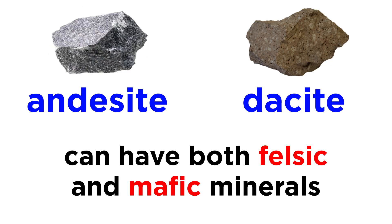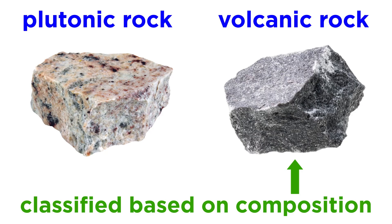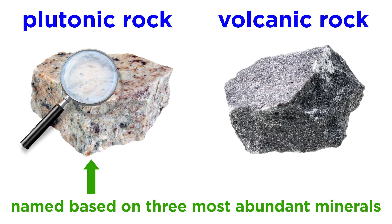Andesites and dacites can have both felsic and mafic minerals, but are typically mostly plagioclase, with lesser amounts of pyroxene, amphibole, and quartz. Plutonic igneous rocks have an entirely different naming convention than volcanic rocks, which are classified based on their composition, instead being named based on their three most abundant minerals. This is because the minerals in plutonic rocks can be easily identified in hand sample, whereas volcanic minerals are typically too small.